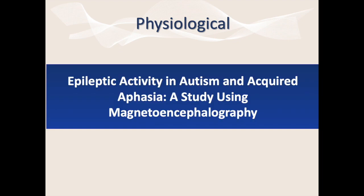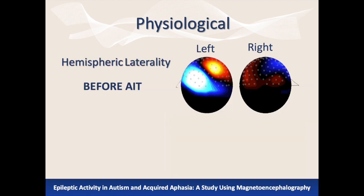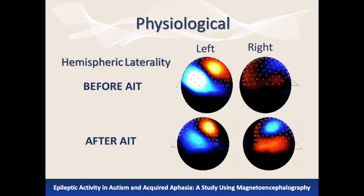In this study, magnetoencephalography and EEG recordings were used to measure electrical activity in the brain before Berard AIT. After Berard AIT, we can clearly see that a more normalized balance or symmetry in activity was observed.